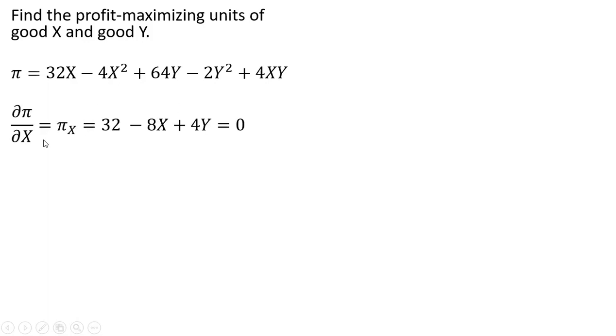First thing we're going to do is get the partial derivative of the profit function with respect to X, and that equals 32 minus 8X plus 4Y. And we set that equal to 0, and then we get the partial derivative of the profit function with respect to Y.